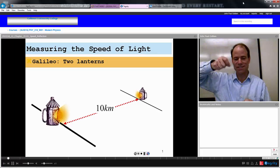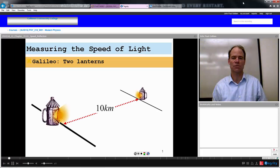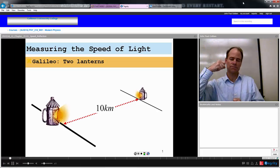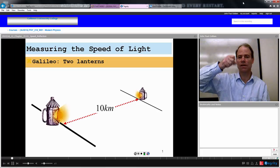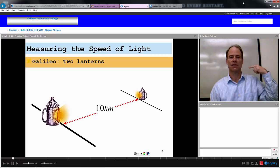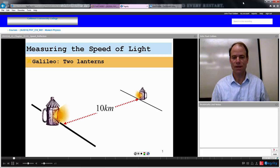Exposing it so that the second observer 10 kilometers away would see that light. As soon as they saw the light, they would reveal their lantern, and so their light would come back to the first observer, and the first observer would see that light and then stop the clock. So basically, first light is revealed, second light comes back, stop the clock, and you're measuring how fast the signal passes there and back again, 20 kilometers.